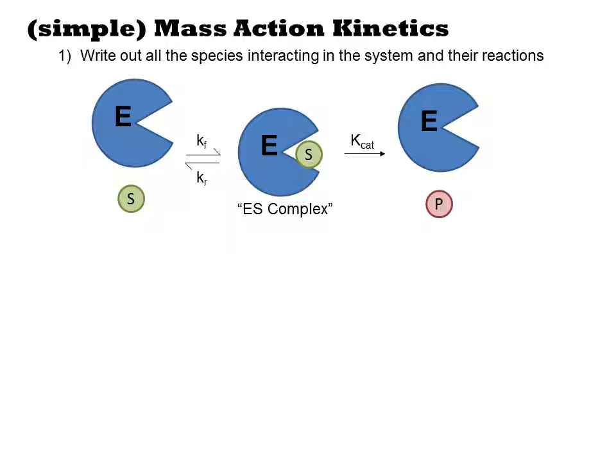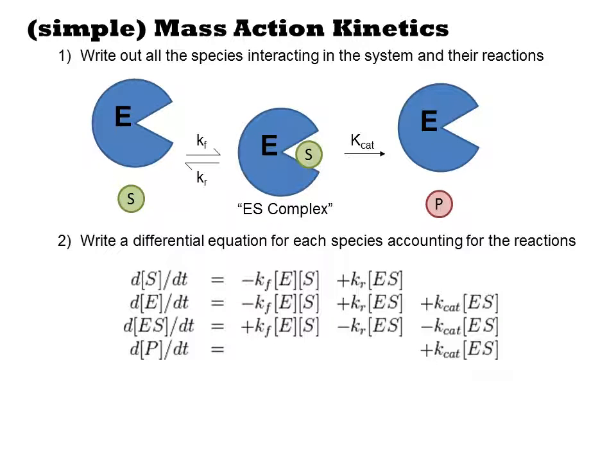If we represent the sequence of events this way, we can write a differential equation to describe each species' concentration accounting for the reactions that take place. So there are four distinct species described in the diagram: E, S, ES, and P. So we get four differential equations, and each one has a term associated with one of the arrows in the diagram.